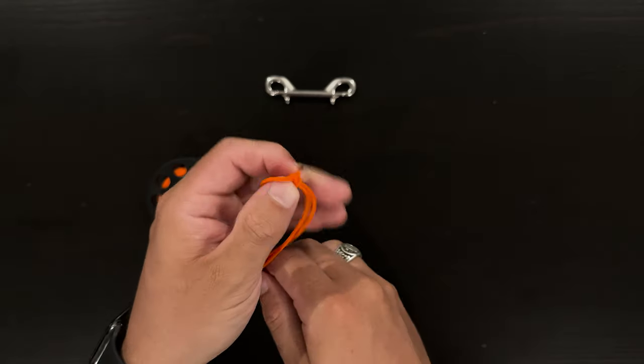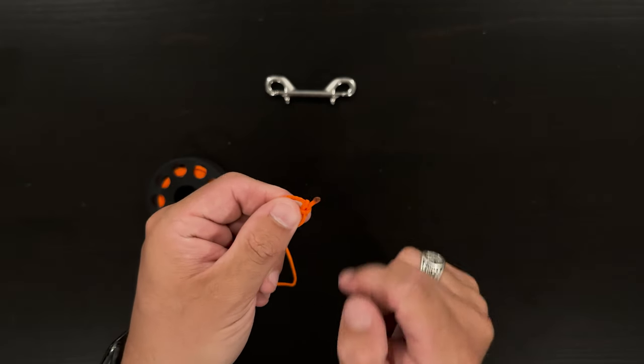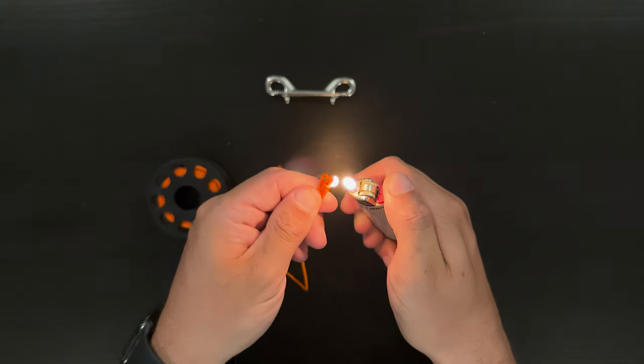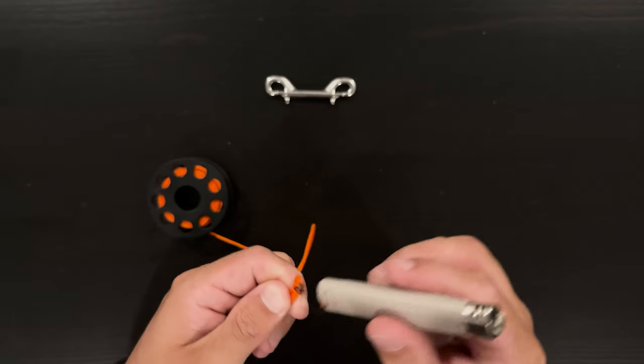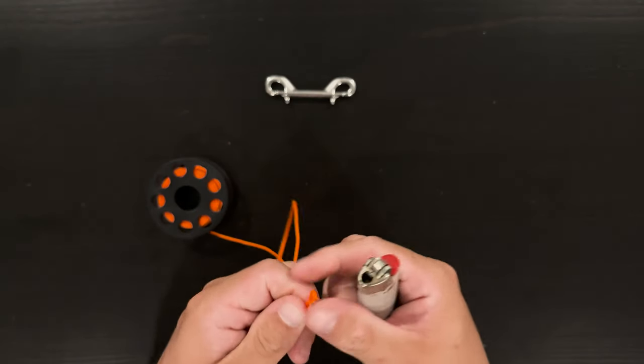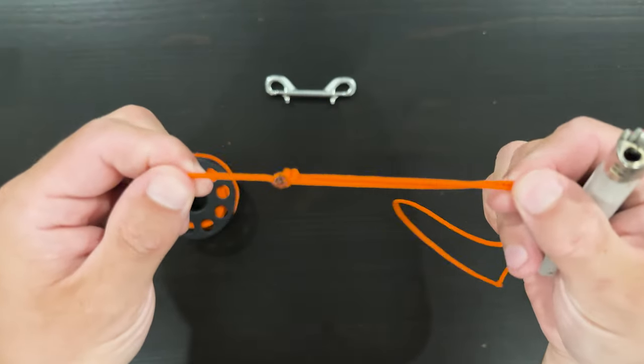If you have any excess line coming off the end of that knot there, you can just cut that and then burn it with a lighter and smudge it out with the side or bottom of the lighter so it gets smashed right against the knot and that'll help that knot never come undone on you at all.